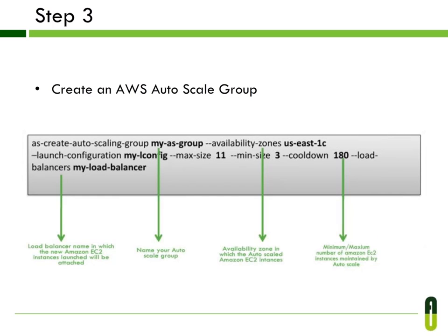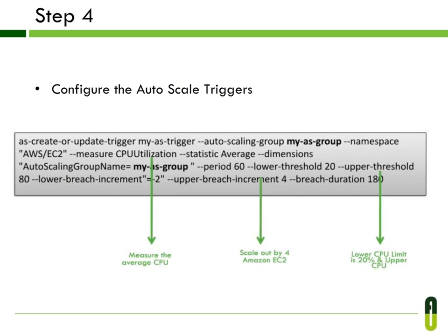Create an AWS Autoscale group. Put your group name, availability zone for your Autoscale EC2 instance, load balancer's name, and Amazon EC2 instance number — minimum instance and maximum instance. Place your load balancer name so that the auto-launched Amazon EC2 instances will be attached to it. Now configure the trigger for Autoscale: edit your group name as per your instance and CPU limit. The lower CPU limit is 20% and the upper limit is 80%, and your instance scales out with up to 4 Amazon EC2 instances. You can set the upper and lower CPU limits as per your configuration.